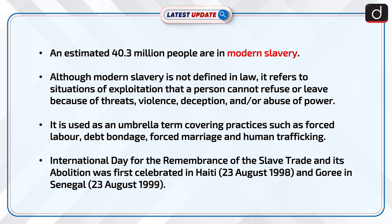An estimated 40.3 million people are in modern slavery. Although modern slavery is not defined in law, it refers to situations of exploitation that a person cannot refuse or leave because of threats, violence, deception, and/or abuse of power. It is used as an umbrella term covering practices such as forced labour, debt bondage, forced marriage, and human trafficking.